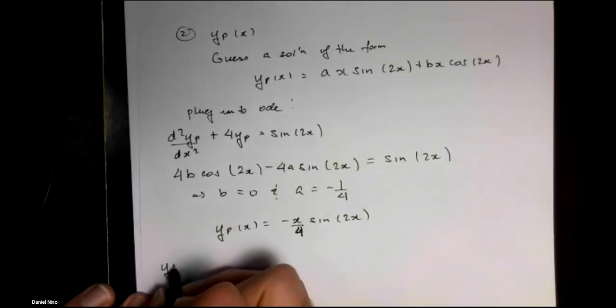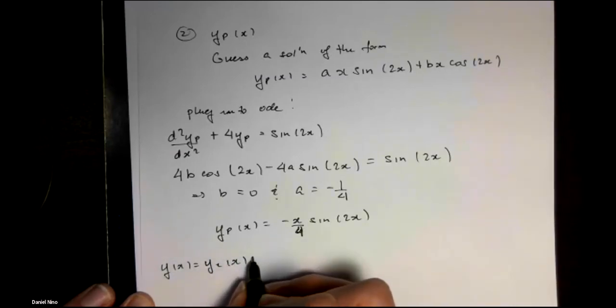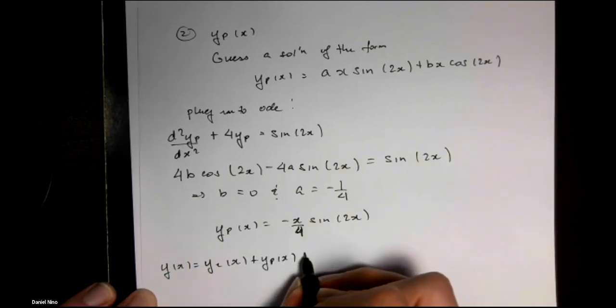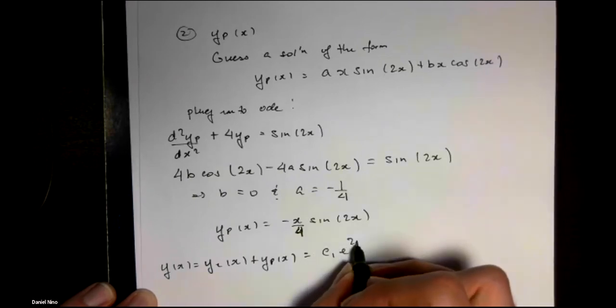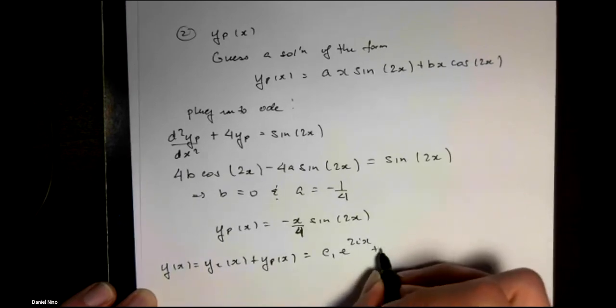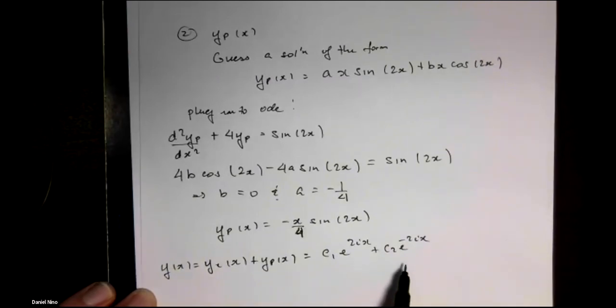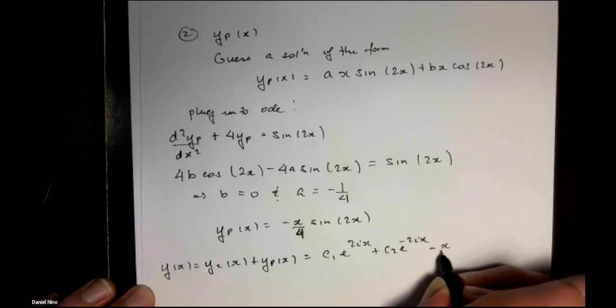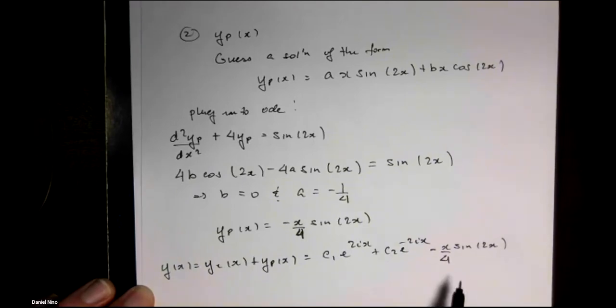This leaves us with a general solution, which is the complementary solution plus the particular solution: C1 e to the 2ix plus C2 e to the minus 2ix plus our particular solution that we found.